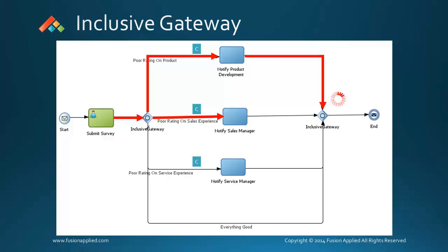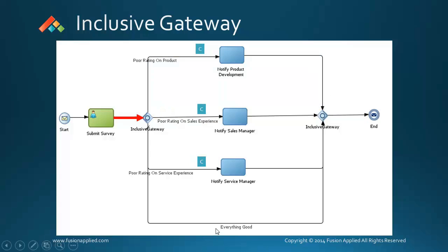When one of the tokens reaches the merge gateway, it waits until the other tokens arrive and then leaves the gateway. You must also define one default path — if none of the conditions evaluate to true, the process token will take this path.